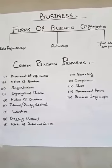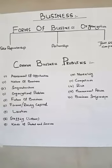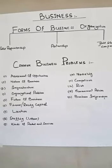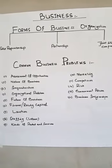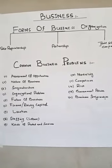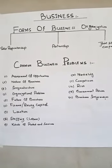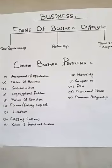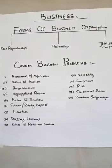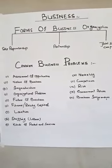Number seven is location. Location plays an important role in business. The success of a business depends upon the right product, at the right time, at the right place.